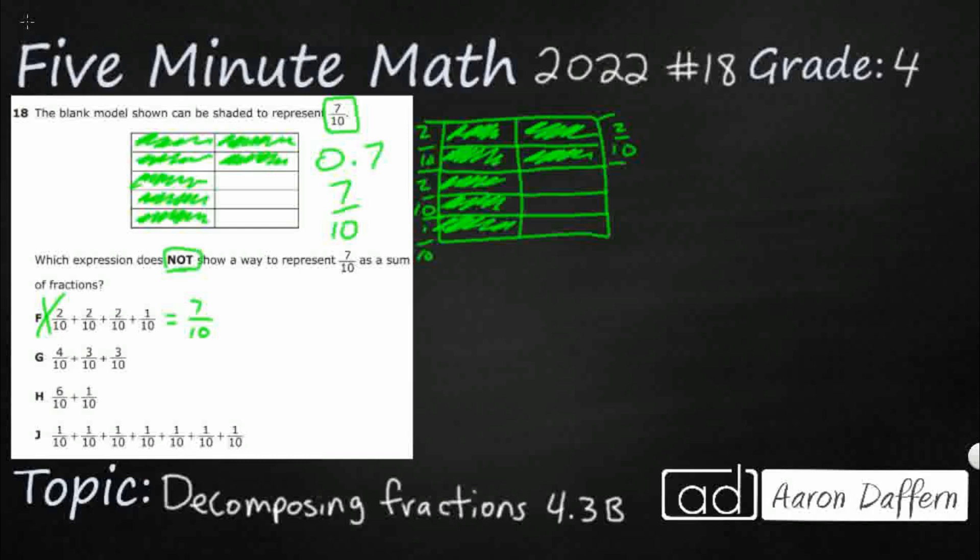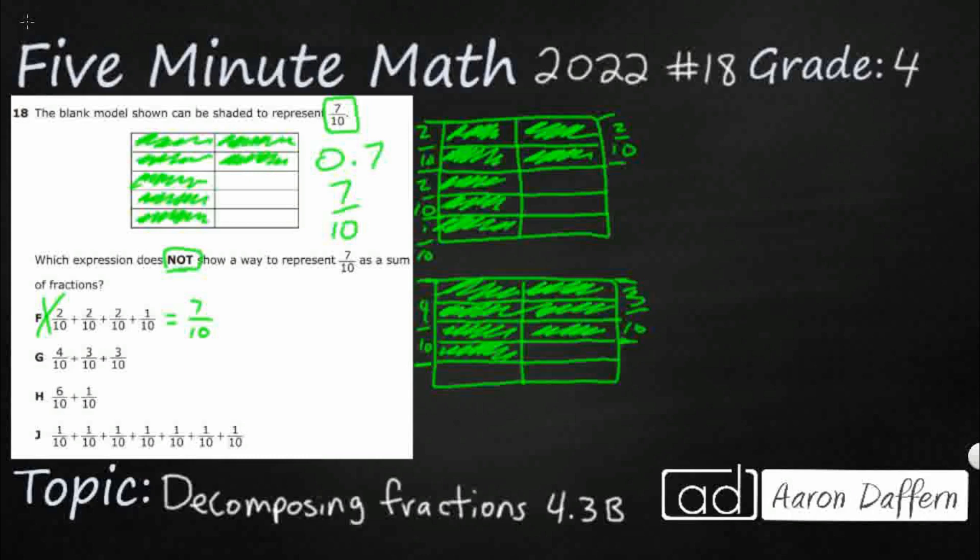Let's look at G. I'm going to draw it right here and see what happens when we add all of these tenths. I've got four-tenths, so I'm going to do four-tenths right here: one-tenth, two-tenths, three-tenths, four-tenths. I need three-tenths - I'll do that right here: one-tenth, two-tenths, three-tenths. Already it's looking a bit big. And I've got to do the other three-tenths right here. That's one-tenth, two-tenths, three-tenths. I shaded in the whole thing.